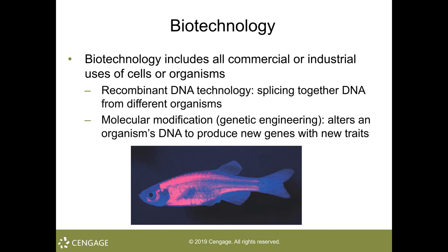This chapter also explores some of the practical applications of DNA technologies. Altering the DNA of an organism to produce new genes with new traits, called genetic engineering, is used in many ways, ranging from basic research to the production of strains of bacteria that manufacture useful products and to the development of plants and animals that express foreign genes. That is a genetically engineered zebrafish, which is the Danio rerio, and it carries a gene from a jellyfish that codes for a fluorescent protein.